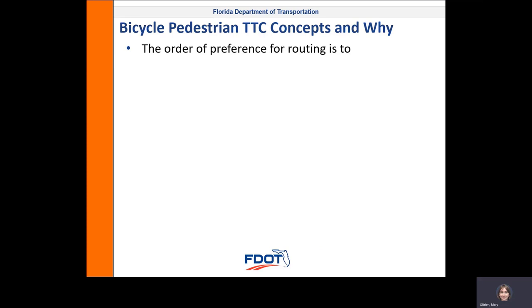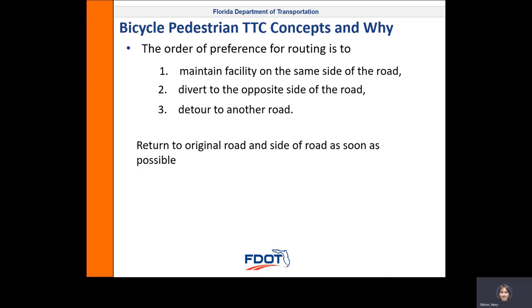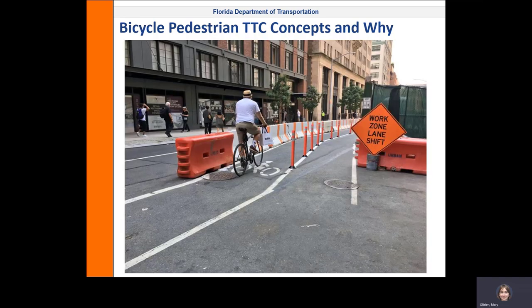Next, there is an order of preference for rerouting of bicycles and pedestrians. The first preference is to maintain the bicycle and pedestrian facility on the same side of the road. If you can't do that, then divert to the opposite side of the road, and if you can't do that, then detour to another road. But in all cases, return to the original road and the original side of the road as soon as possible. Crossing the street increases the likelihood of a crash, so the ideal situation is to keep pedestrians or people biking on the same side of the road. This also helps to keep the detour or diversion as short as possible. Keeping pedestrians and people biking on the same road avoids them going out of their way and keeps them on a road where they are comfortable with the traffic and neighborhood.